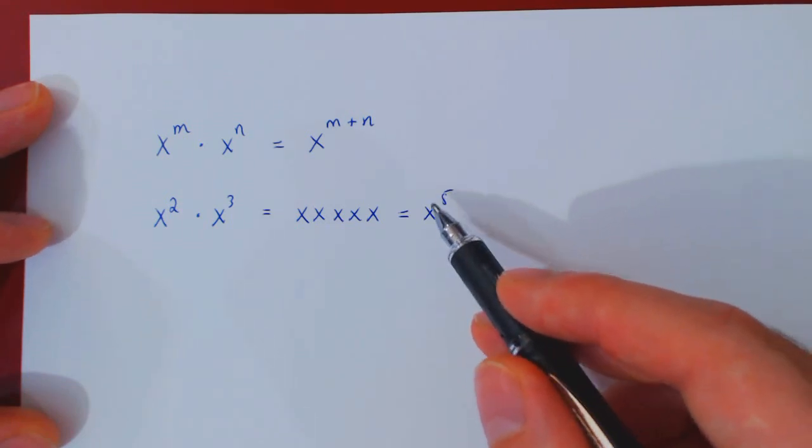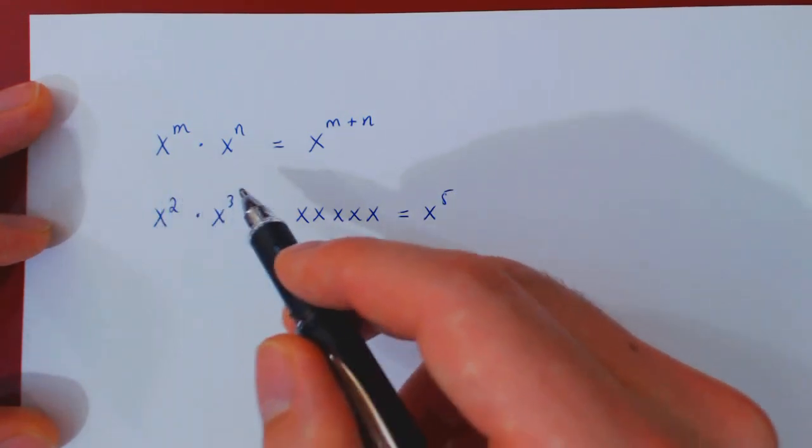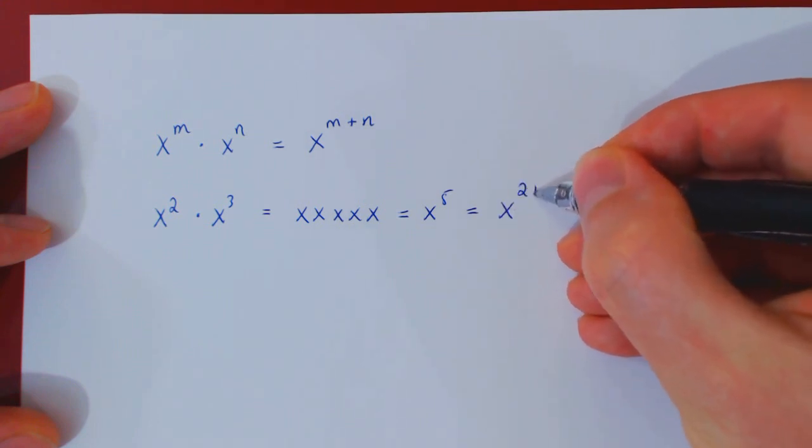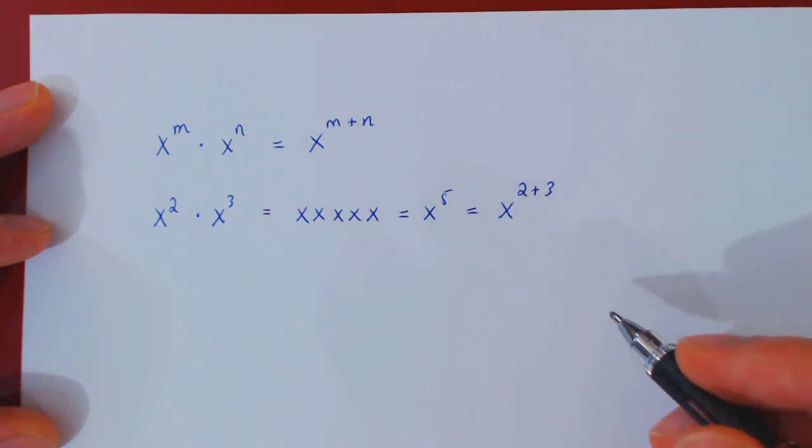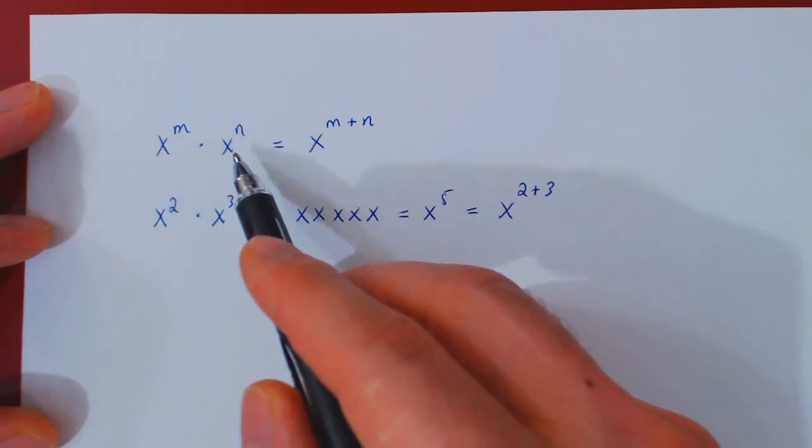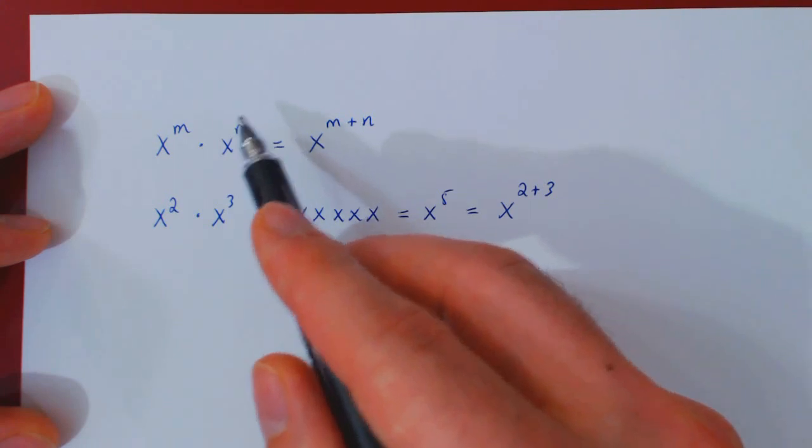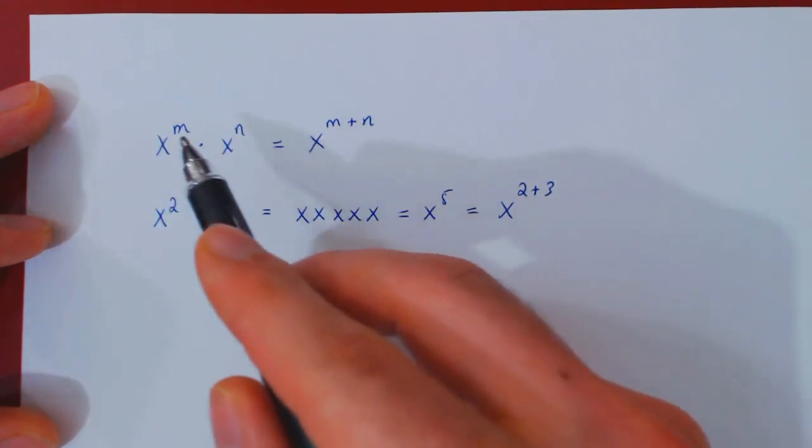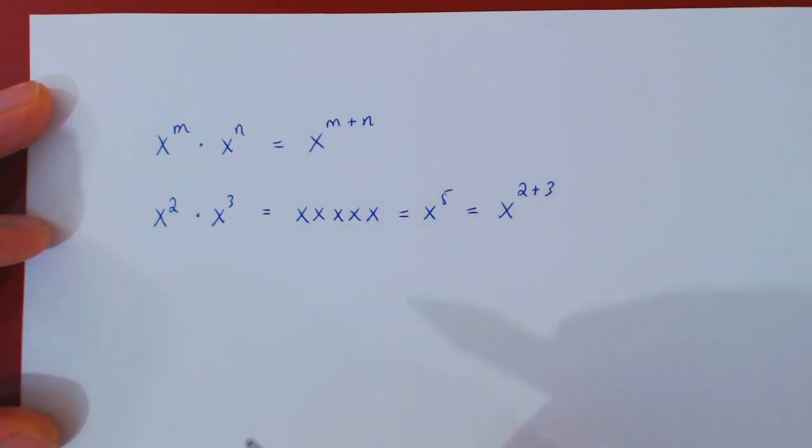And now you ask, well, how do we obtain 5 from 2 and 3? Well, the answer is obvious. It is 2 plus 3. So whenever you multiply two expressions that have the same base, no matter what the exponents are, you can combine the product under a single base by simply adding up the two exponents.